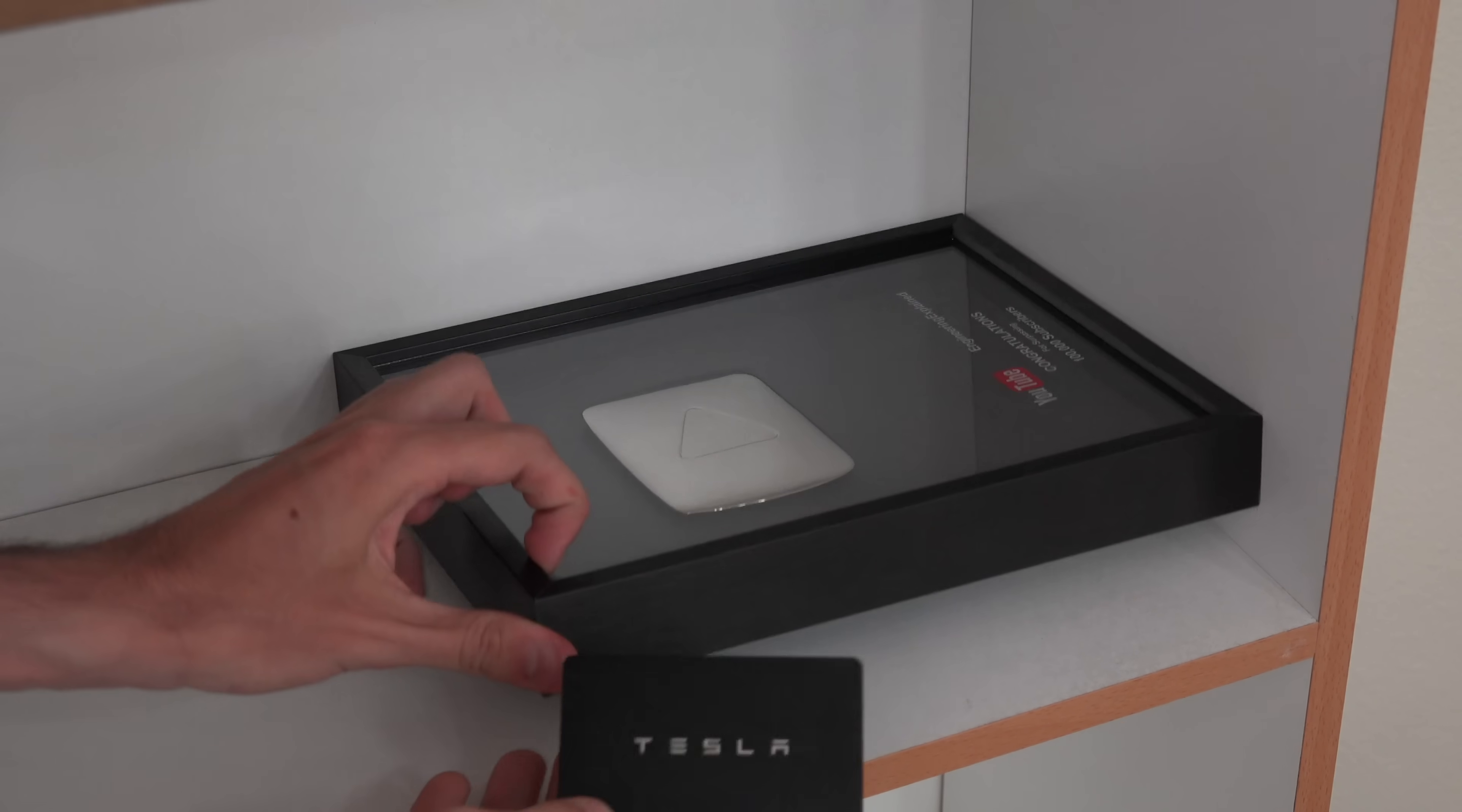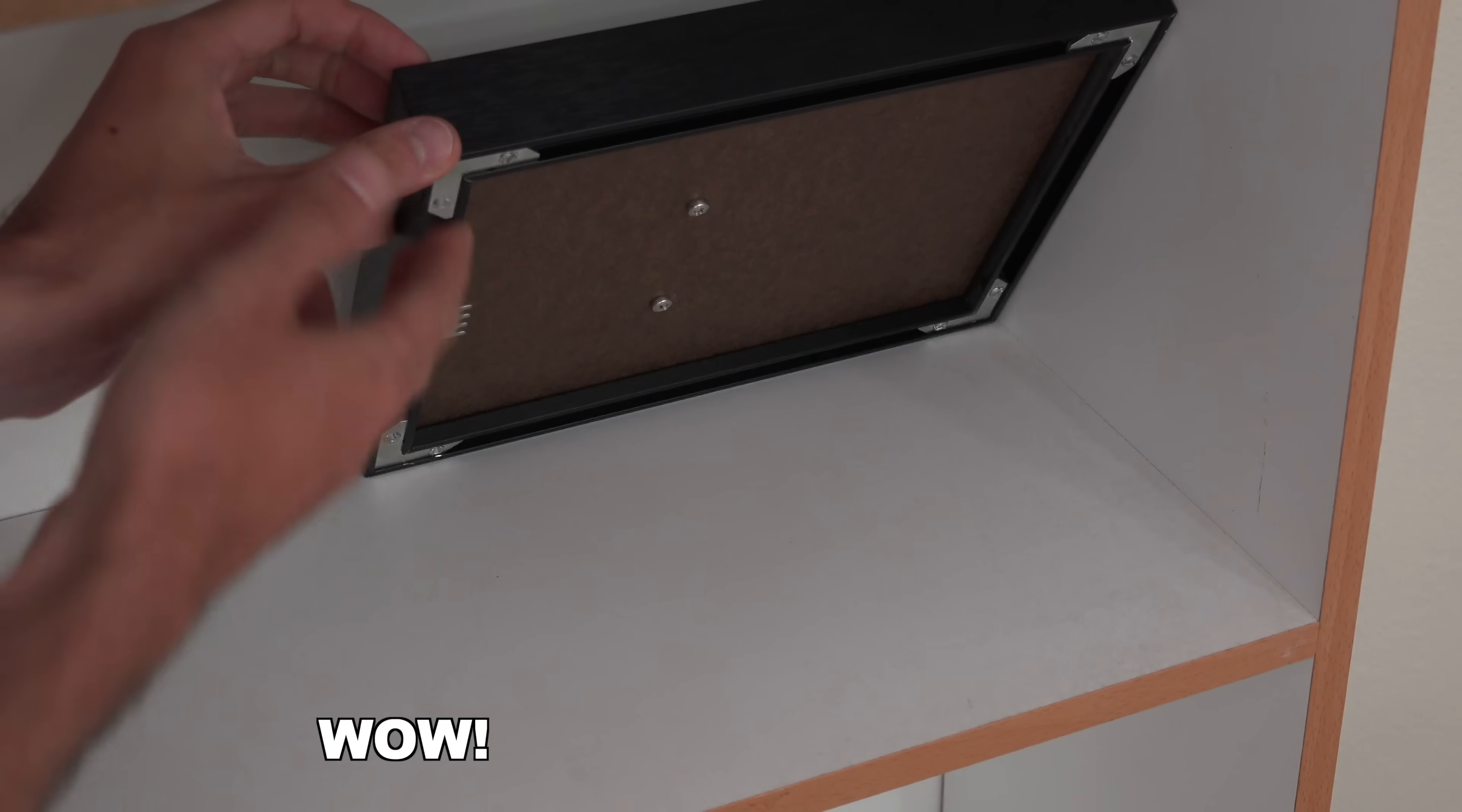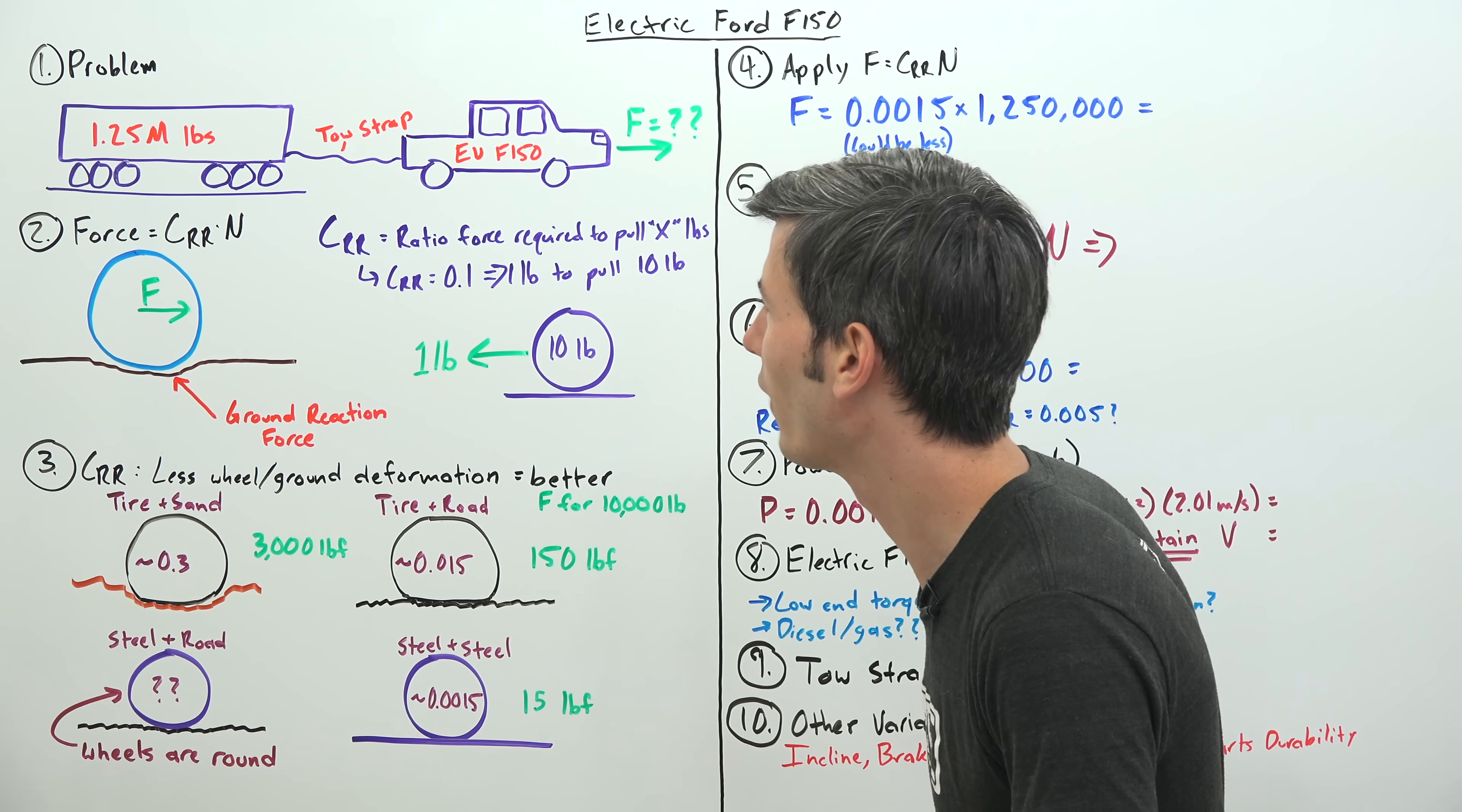However, I think it might give you the dangerous idea that an electric Ford F-150 can actually tow 1.25 million pounds, which in this video I'm going to demonstrate why I believe it cannot. Much like a well-executed magic trick, you might see it and be amazed, but once the magician explains how they did it, it's not that cool.